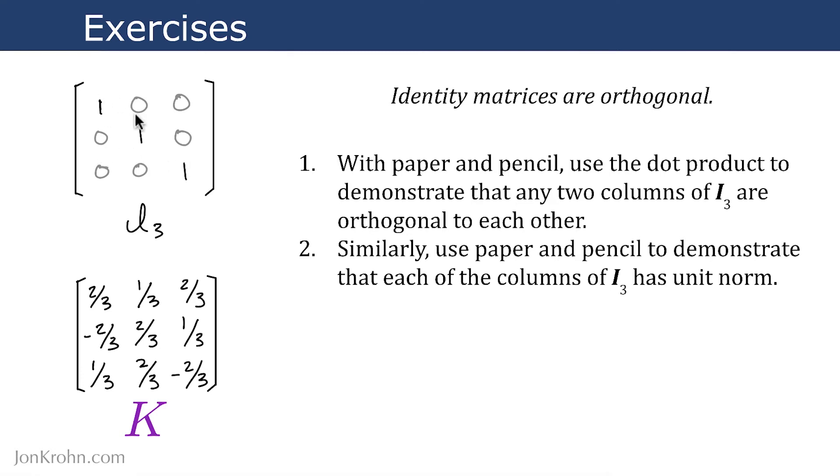By doing that, by showing that all of the columns are orthogonal to each other and that all of the columns has unit norm, that will prove that this identity matrix is an orthogonal matrix.